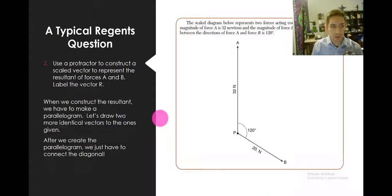Two, use a protractor to construct a scaled vector to represent the resultant of forces A and B. Label the vector R. So the word I want to highlight here is the resultant. And the method we're going to use to construct the resultant is to create a parallelogram. So to do this we just have to kind of measure both of these vectors in centimeters and then slide them up. And I'll show you what I mean by that.